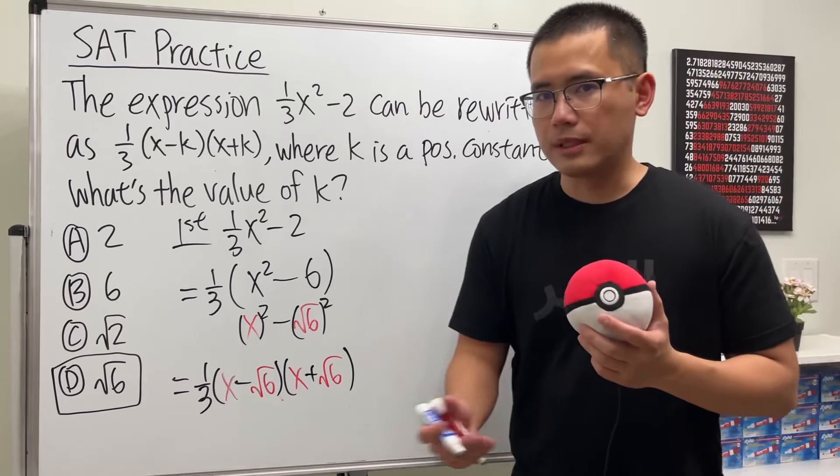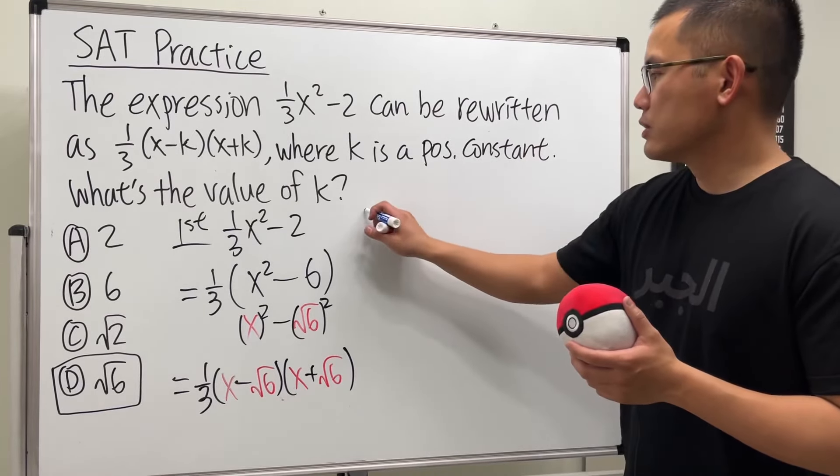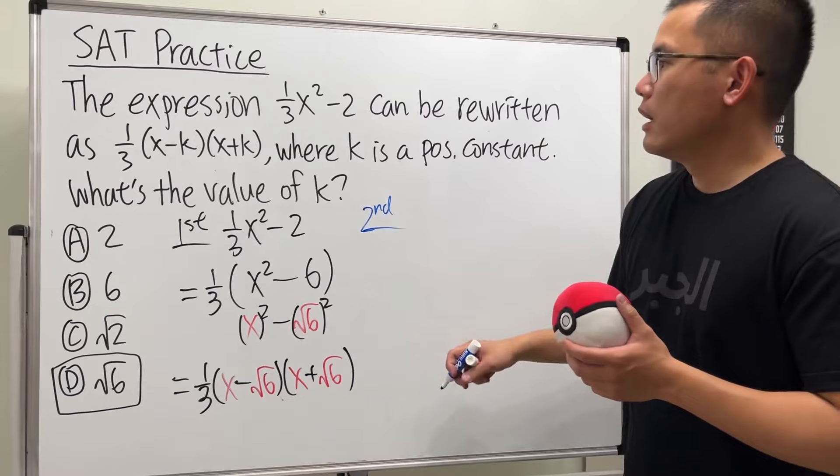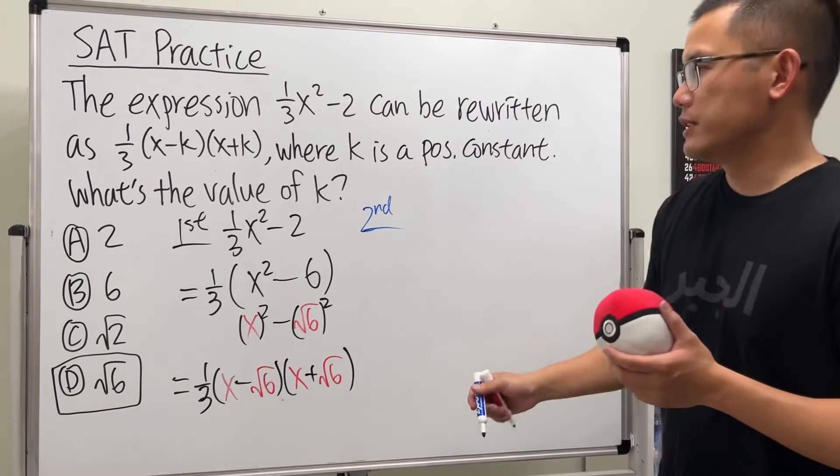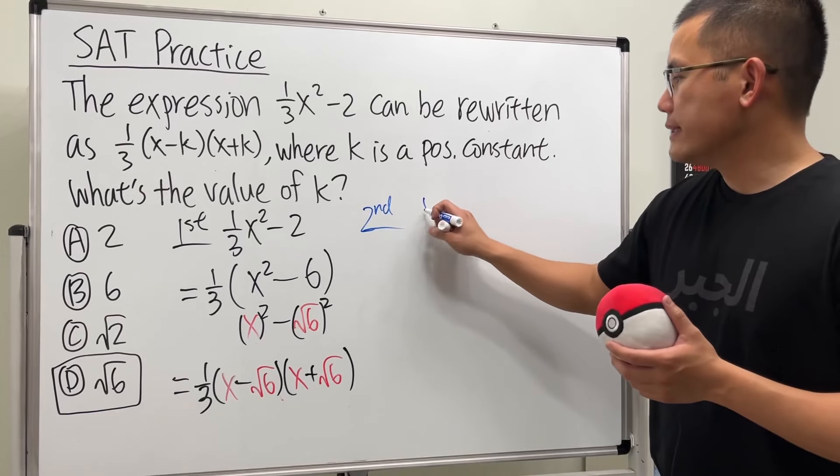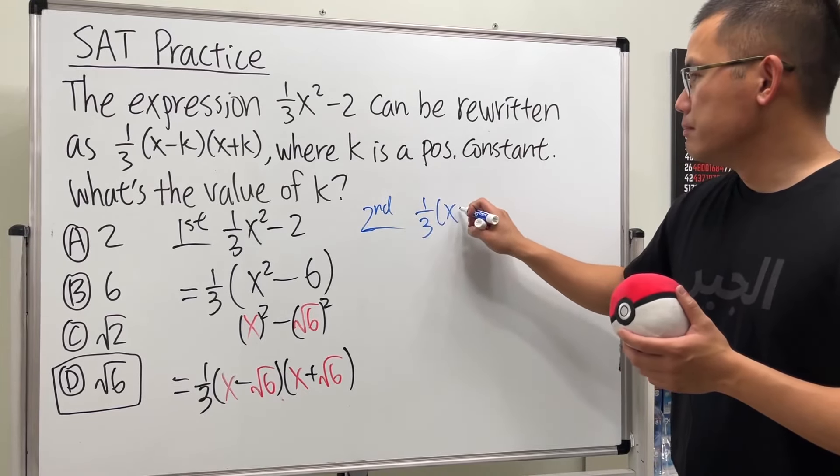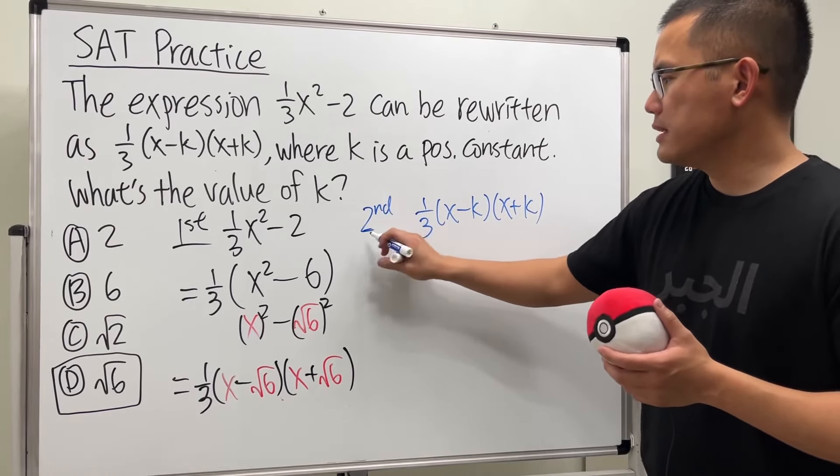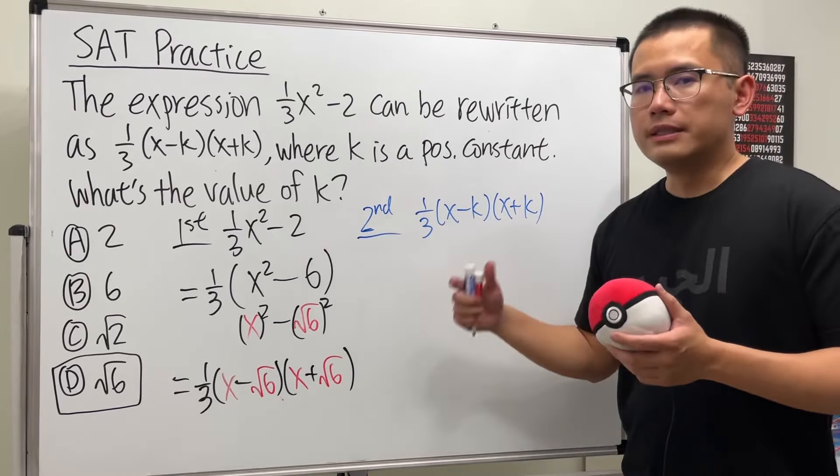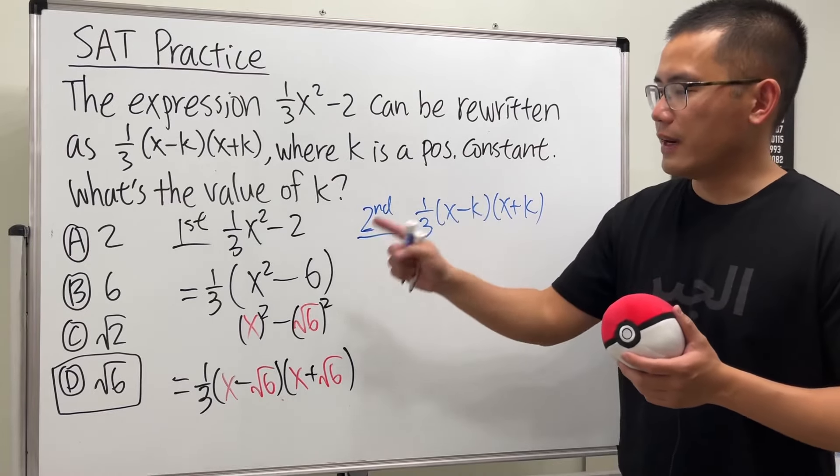Not done yet. Because I promised you, we have another way. Second way. The second way is, we're going to start off right here and then we'll try to work backwards. So we have 1/3 (x - k)(x + k). This right here is going to be slightly easier, because it's easier to multiply than to factor.